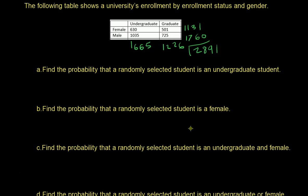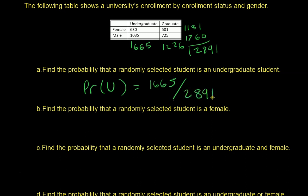Now let's calculate probabilities. The probability of a randomly selected student being an undergraduate: there are 1665 undergraduates out of 2891 total — that's 1665/2891. The probability of being female: 1131 females out of 2891, so 1131/2891.